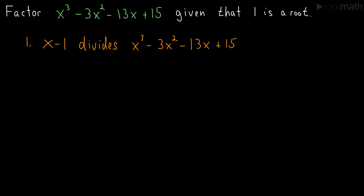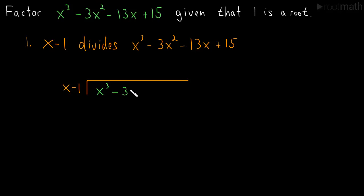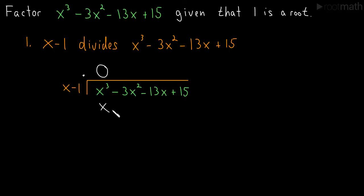Let's start by setting it up. We'll have x minus 1 dividing into the polynomial x cubed minus 3x squared minus 13x plus 15. This works a lot like long division for numbers. We want to put a term up here, multiply it by x minus 1, put the result down below, and then subtract.